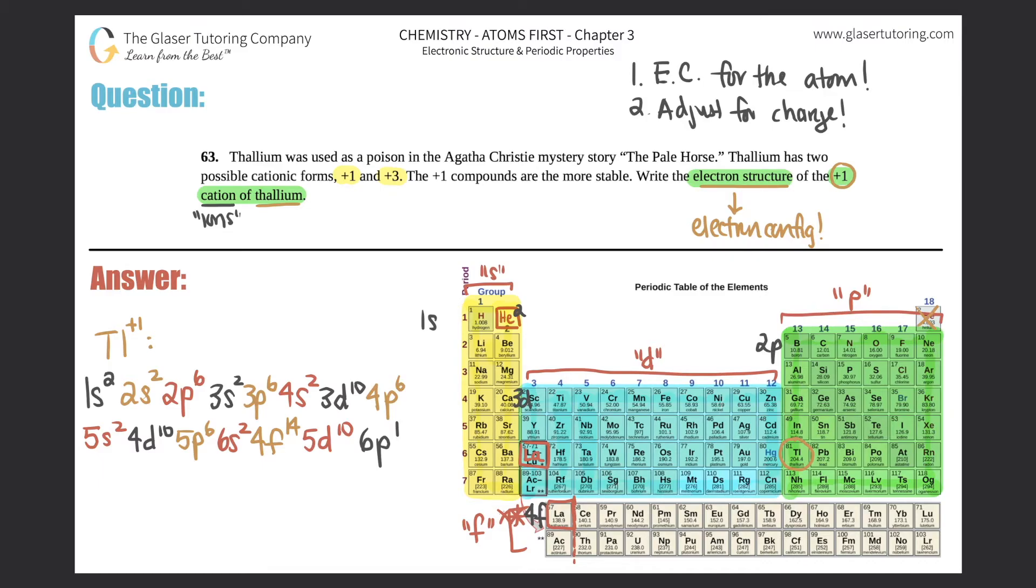And now I'm finally at 6p, and that is number 1. Okay, that's without taking into consideration the charges, because thallium's right here. This is 6p, and it was the first box, so that's why it's 6p¹. Now we have to take into consideration this +1 charge.